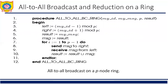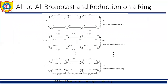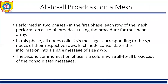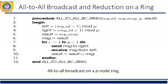For example, the first communication step for all-to-all reduction on an 8-node ring would correspond to the last step shown in the figure, with node 0 sending a message of node 1 to node 7 instead of receiving it. The only additional step required is that upon receiving a message, the node must combine it with the local copy of the message that has the same destination as the received message, before forwarding the combined message to the next node. The algorithm for this procedure is shown for all-to-all reduction.